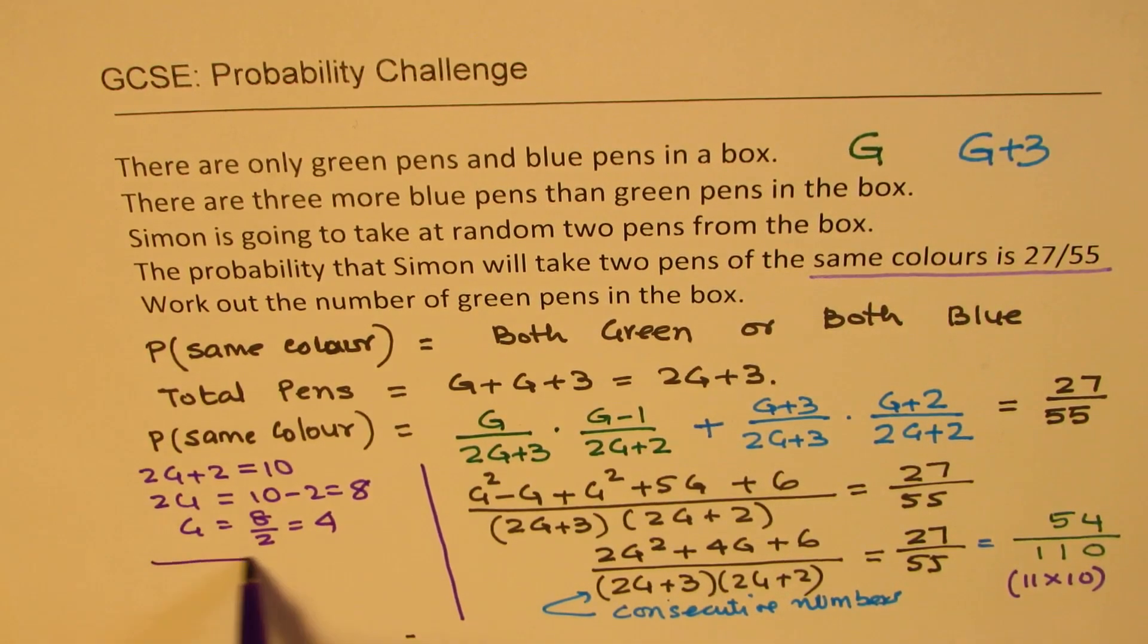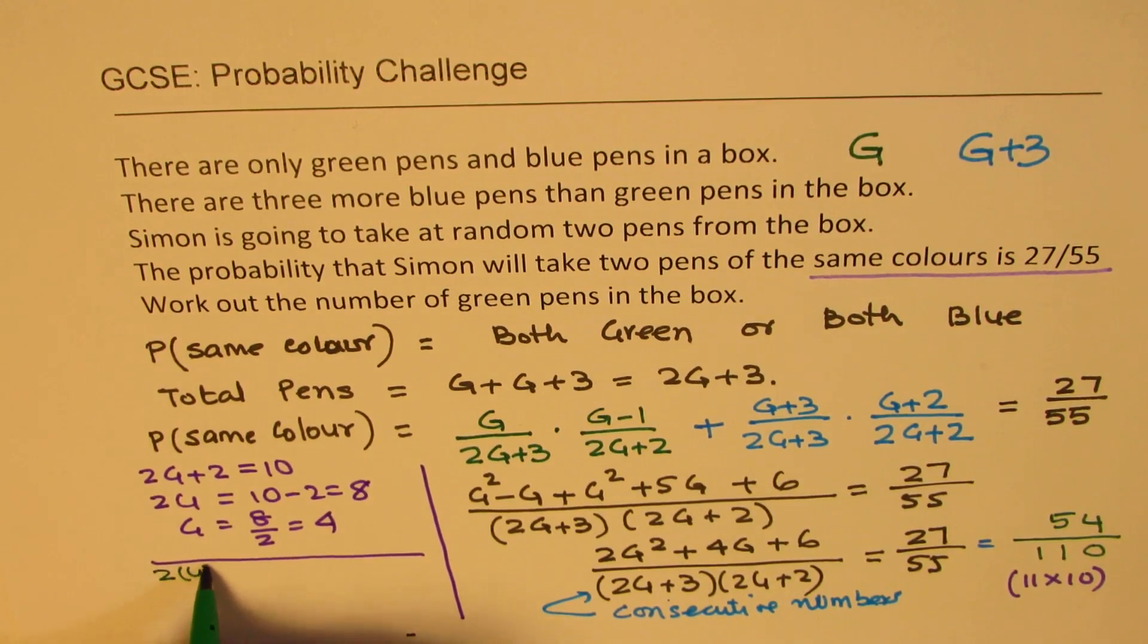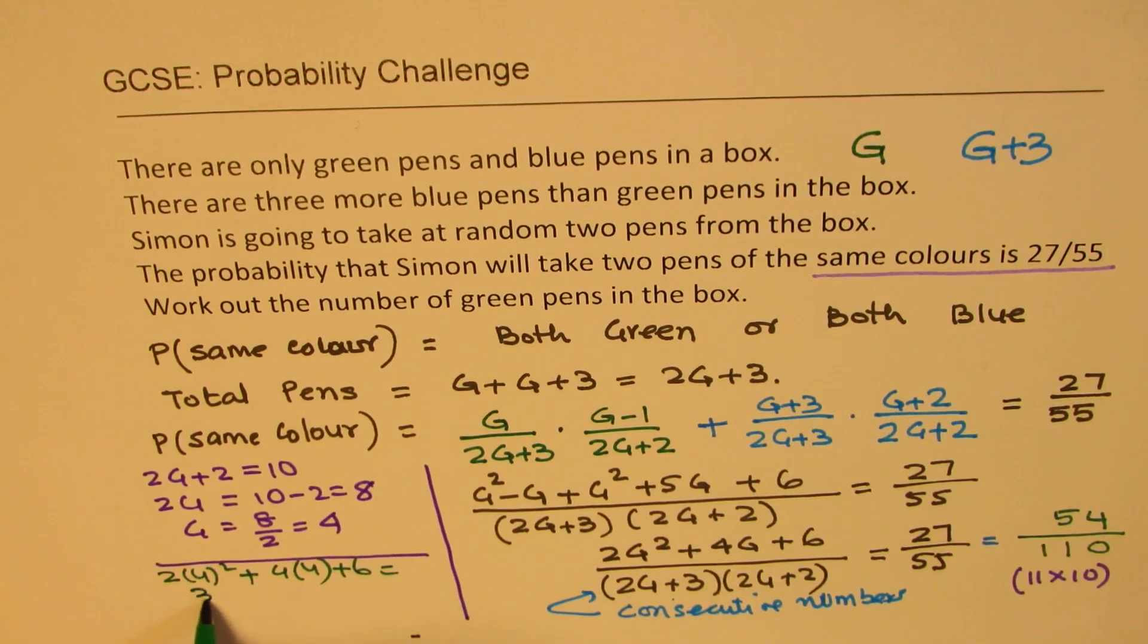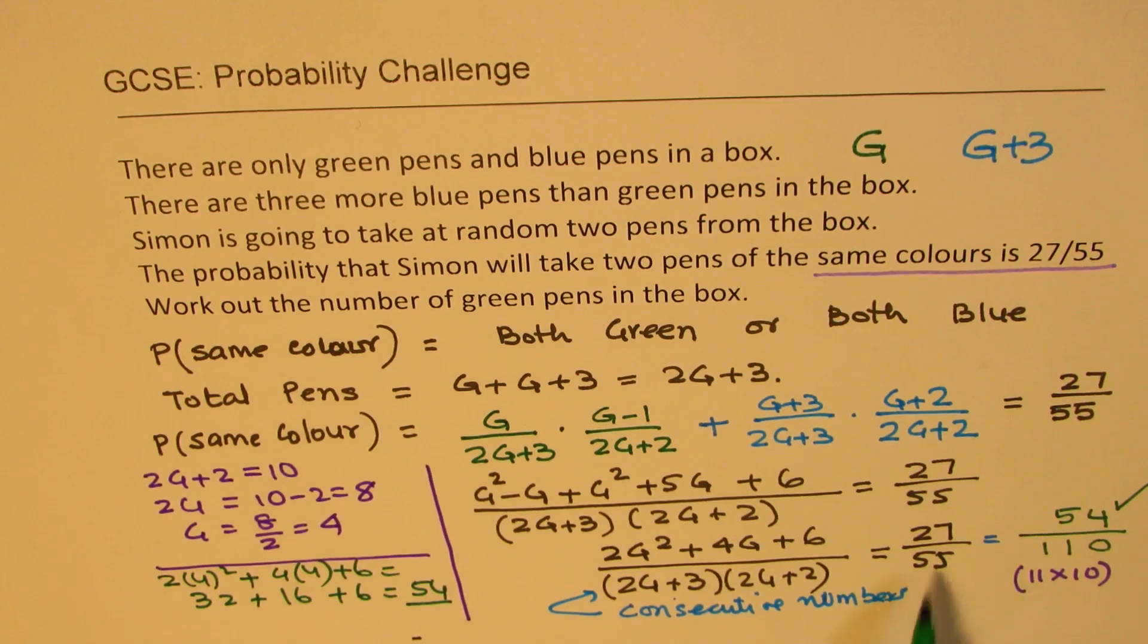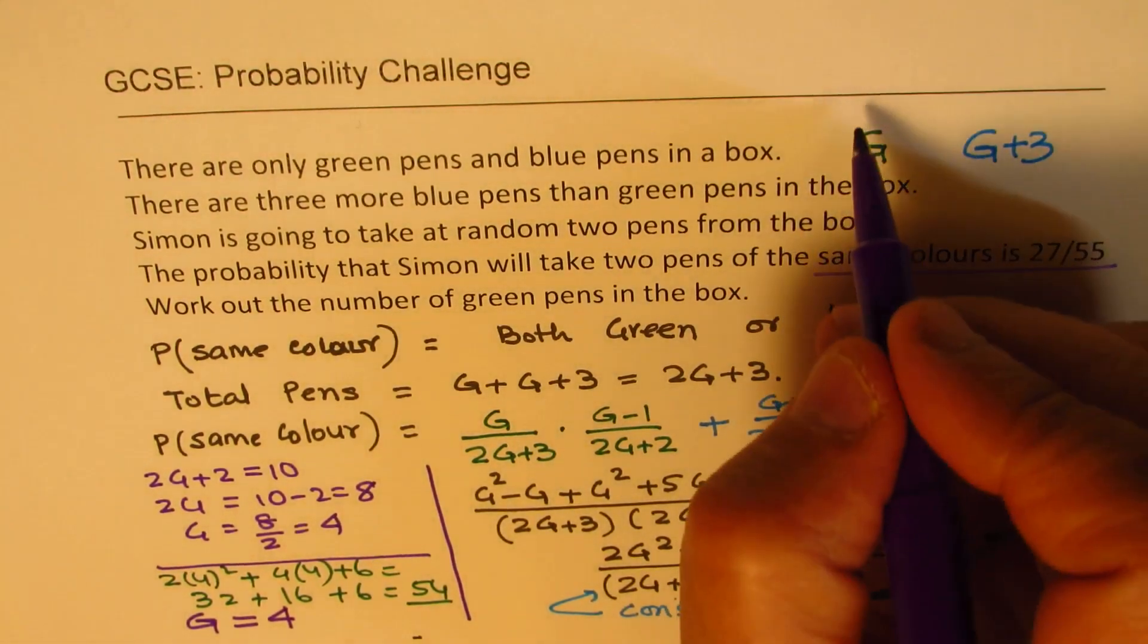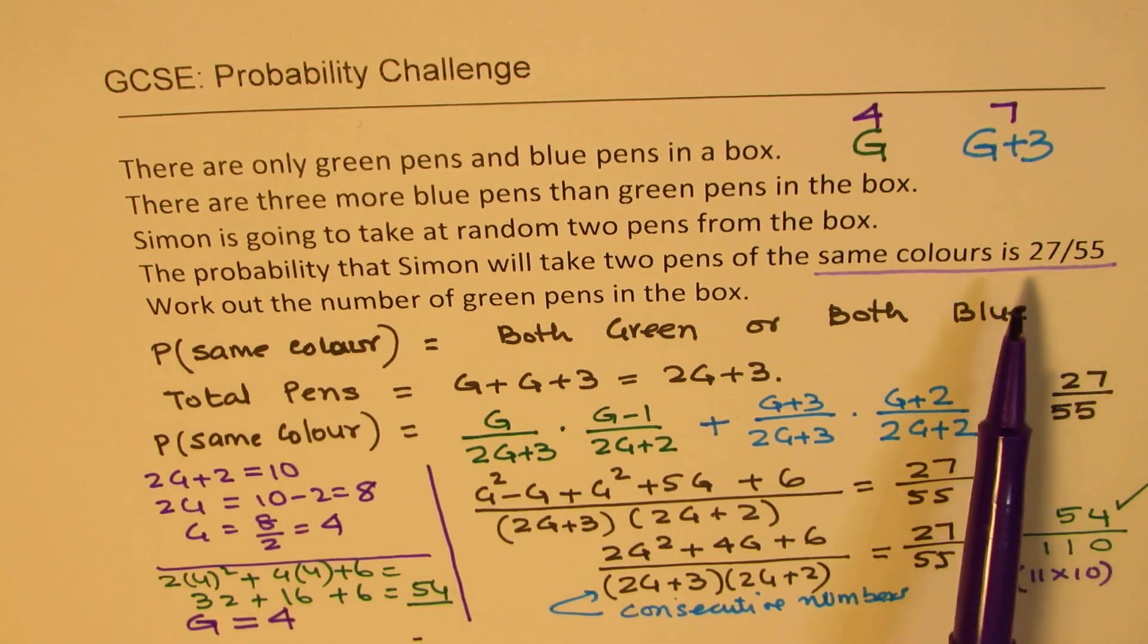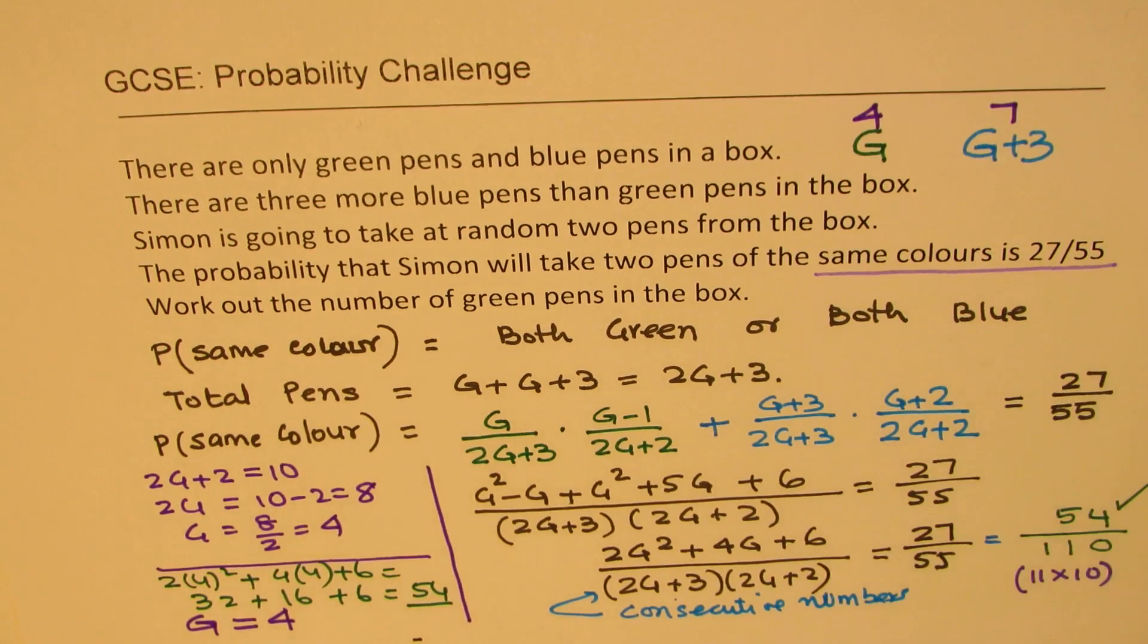If I substitute 4 here in the numerator, what do I get? We get 2 times 4 square plus 4 times 4 plus 6. Now, 16 times 2 is 32 plus 4 times 4 is 16 plus 6. That gives you 54. It matches with 54 and the denominator also matches. We have found our answer and the answer here is that the number of green pens is basically equal to 4. Now we know that if green pens are 4 then the blue pens are 7 and if you place the value 11 as the total you can see that the probability of getting both green or both of the same color is 27 over 55. That is how this question can be solved.